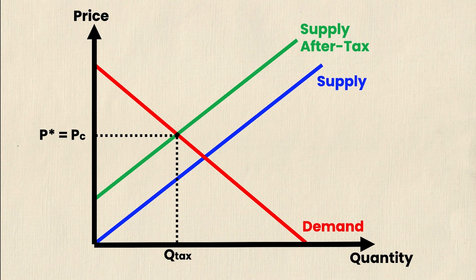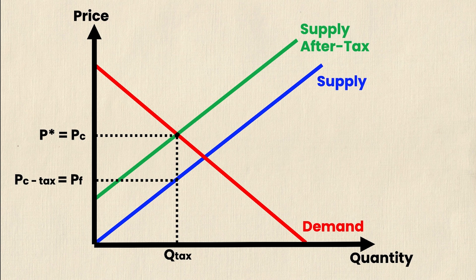The price that the firms are going to receive for the product is actually down here, and I'm going to denote this as price that the consumers pay minus the tax that the government is going to take from the producers, and that's going to be denoted as PF. So you can see that the price consumers pay is higher than the price the firms receive, and the distance in between the middle of PC and PF is just the amount of tax.